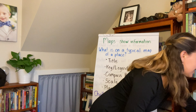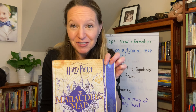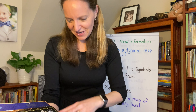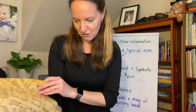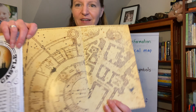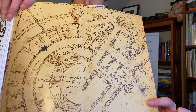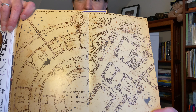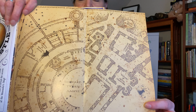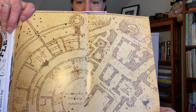Then we've got the Marauder's Map from Harry Potter. Do you remember this one from the movie or the book? The Marauder's Map is a little bit different — it shows locations inside the buildings.